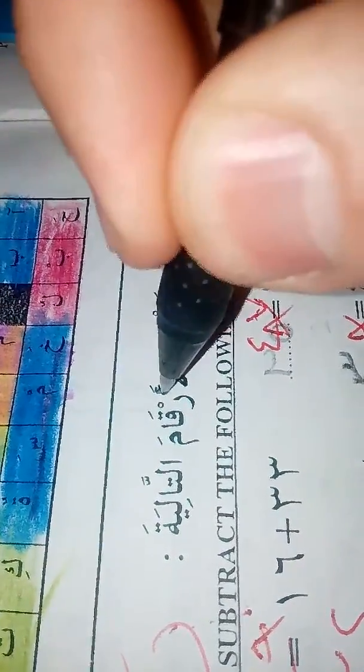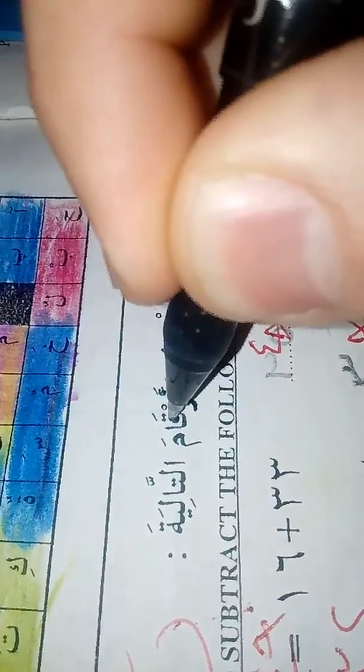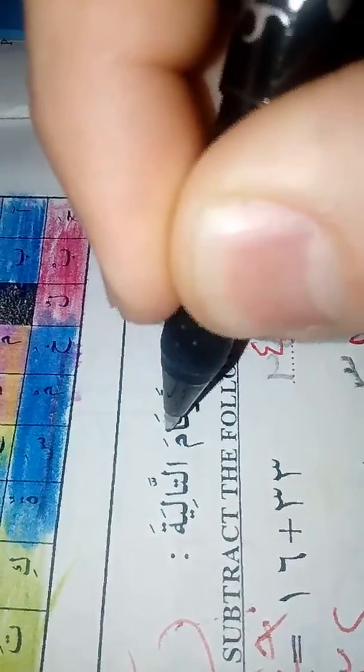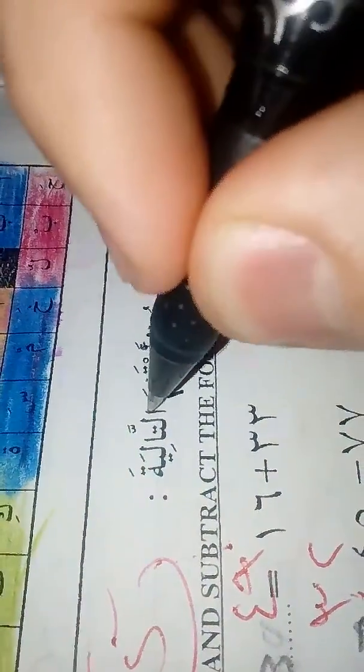That's a, and then there's another a, that's a plural. It's a plural of raqm which means number, ar-raqm. Okay, the numbers. At-taliya, following. So the following numbers - the numbers, the following means the following numbers.